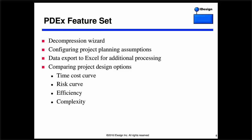PDX dynamically builds the Shell OS and the staffing distribution chart, constantly giving you visual feedback — human beings are visual animals, we need to see charts, not numbers. It has a decompression wizard, saving you the agony of decompressing a project by hand. It lets you configure and capture the project planning assumption — in most projects these are left in the ether of the conference room from eight months ago, but PDX captures them. It also provides a simple data export to Excel, and allows you to compare project design options, showing the time-cost curve, risk curve, efficiency, and complexity.